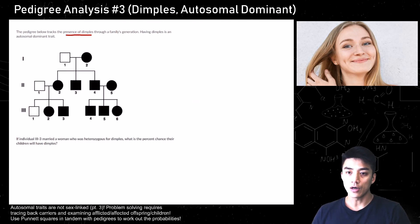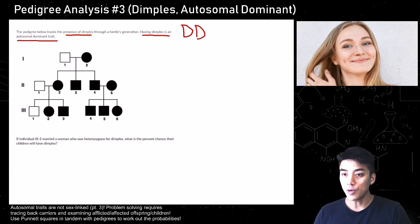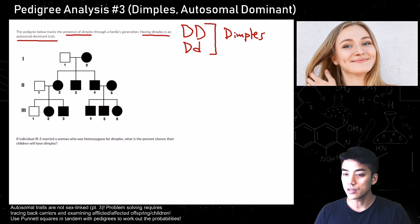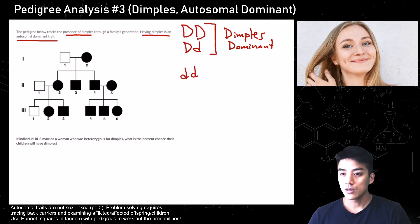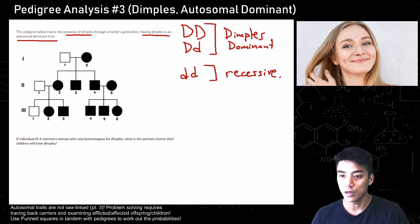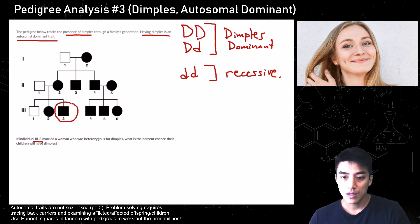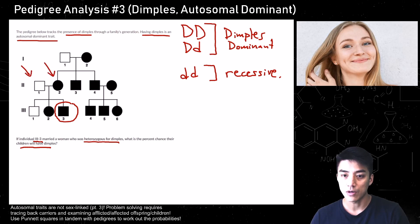In this third analysis we're looking at dimples again — it's an autosomal dominant trait. If you have dimples you're either homozygous dominant, big D big D, or heterozygous dominant, big D little d. The other genotype is little d little d — homozygous recessive, no dimples. The question is: if individual 3,3 married a woman who is heterozygous for dimples, what is the percent chance their children will have dimples? We need to analyze individual 3,3's parents and siblings to figure this out.